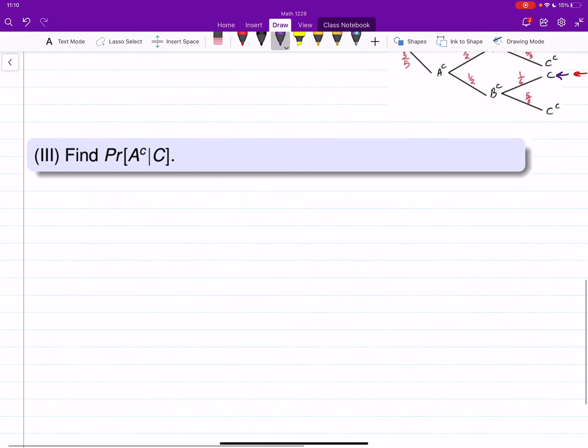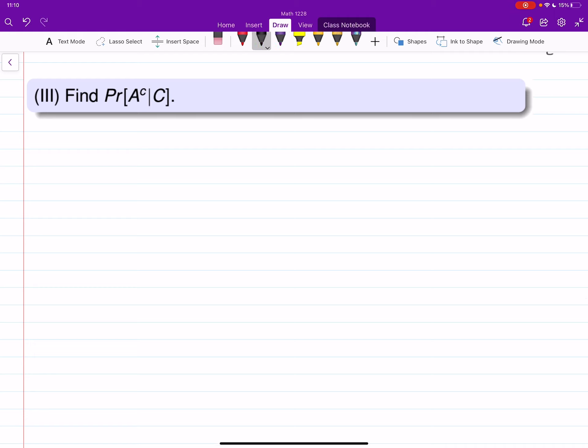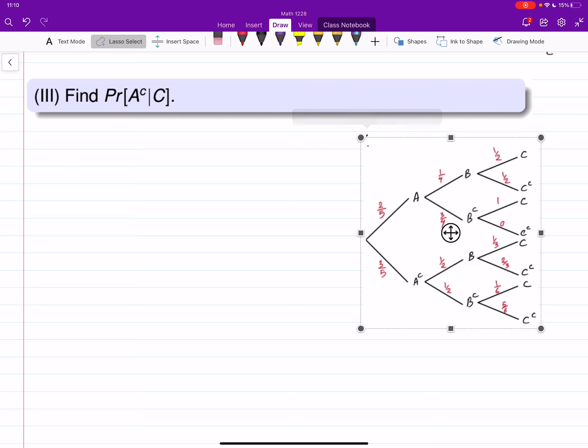And the last part, again, I need to paste the tree here. Okay, so we are trying to find probability of A complement knowing C or given C. Well, again, you can check the order is not the order of the tree. And you can simply do these parts and find each one.